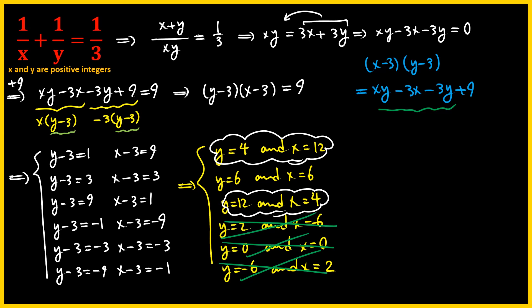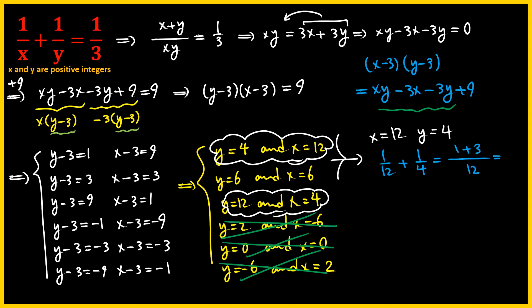I'll go ahead and check these two pairs. For x = 12 and y = 4: the left-hand side gives 1/12 plus 1/4. Getting a common denominator gives (1 + 3)/12 = 4/12, which reduces to 1/3. So x = 12 and y = 4 satisfies the equation.